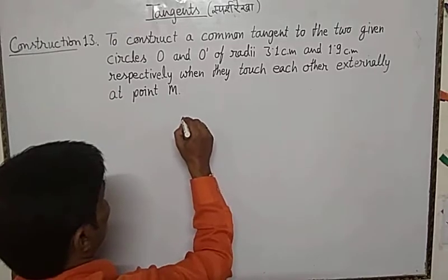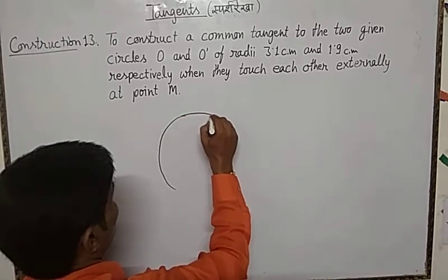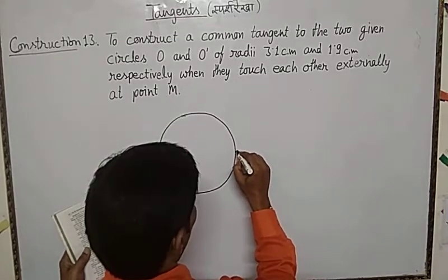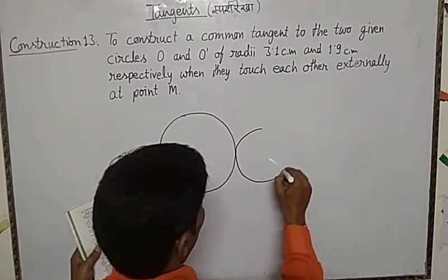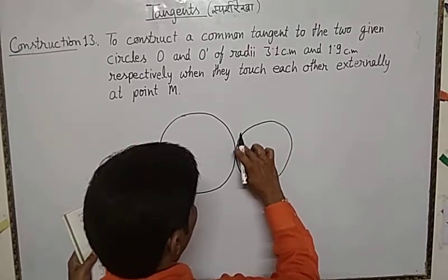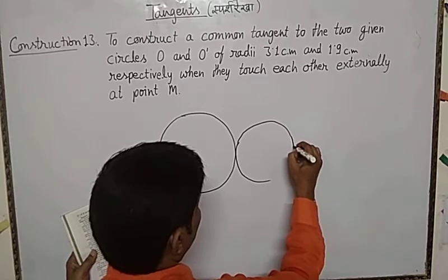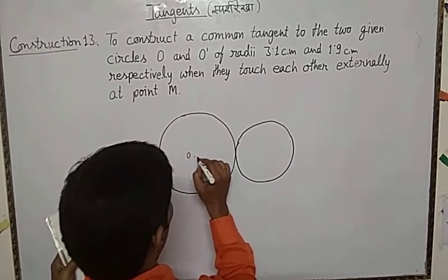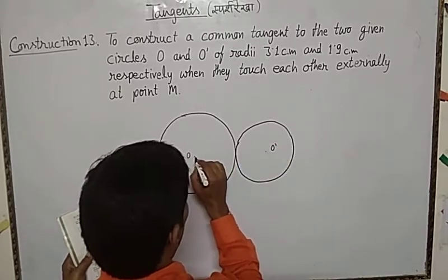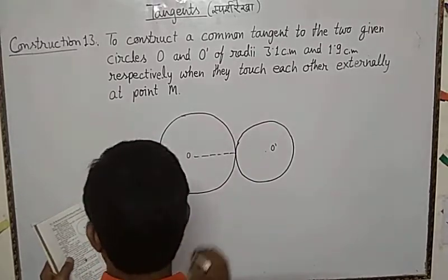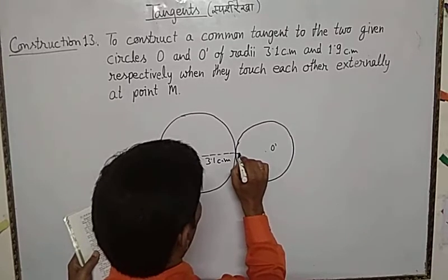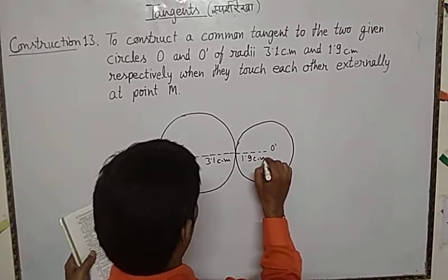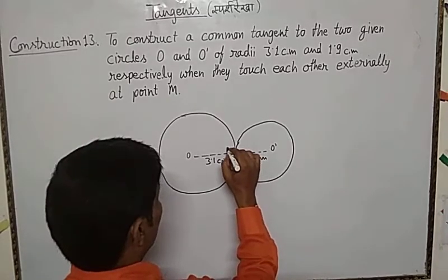Draw the circles with the given radii. These are the two circles with centers O and O'. From here it is 3.1 centimeter and from here to here it is 1.9 centimeter. Where they meet, this is called point M.